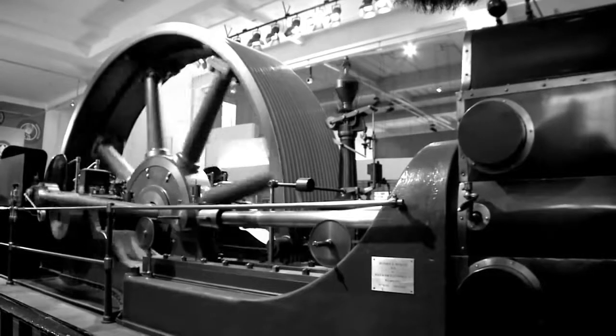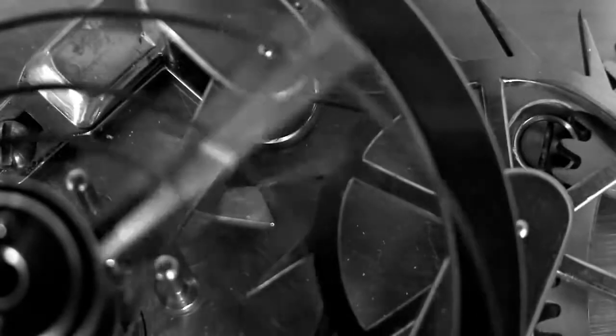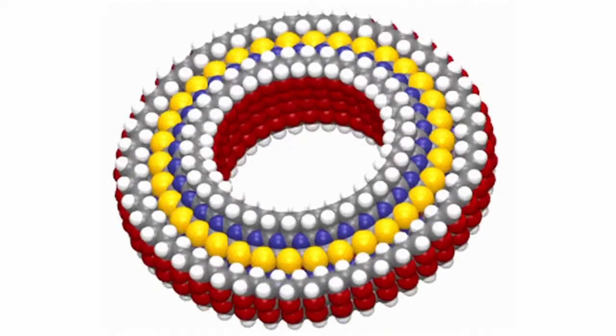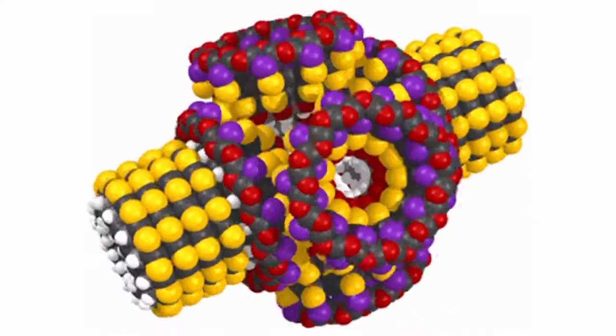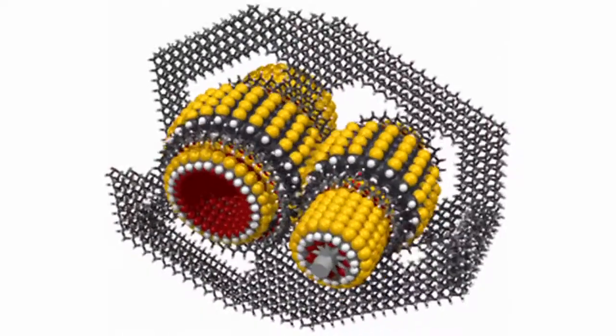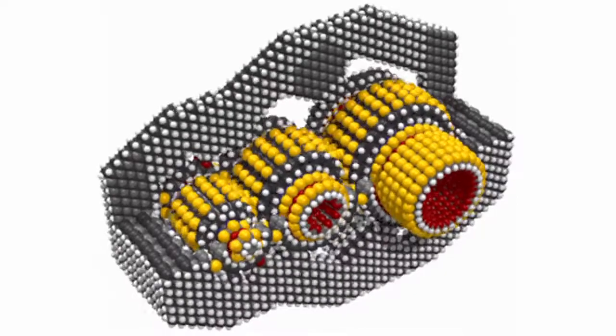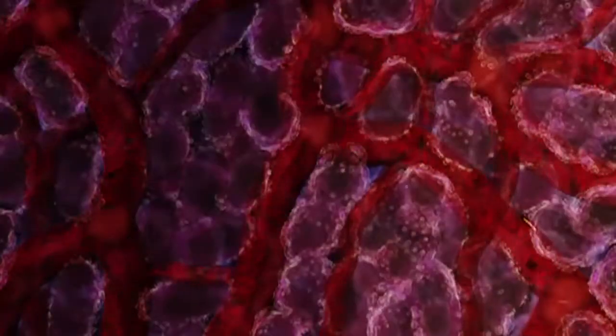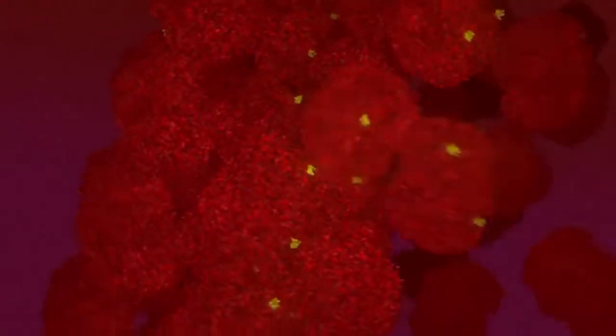Throughout history we've been making smaller and smaller machines. Now scientists are looking at ways to create machines at the smallest scale possible, using atoms as their building blocks. Some researchers believe we could construct molecular machines that could make anything we wanted — if this happens, it will revolutionise our lives. We know that molecular machines can work because they're in every cell of our bodies, working away right now: turning food into energy, fixing damage, keeping you warm, and making new cells. You are already a masterpiece of molecular nanotechnology.